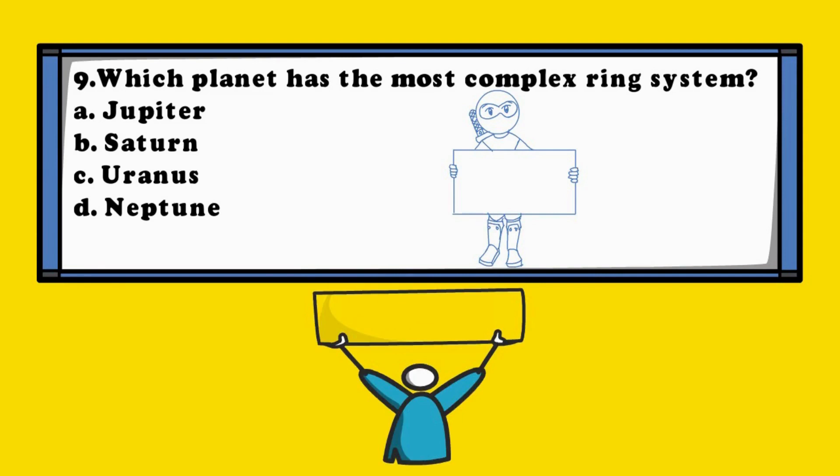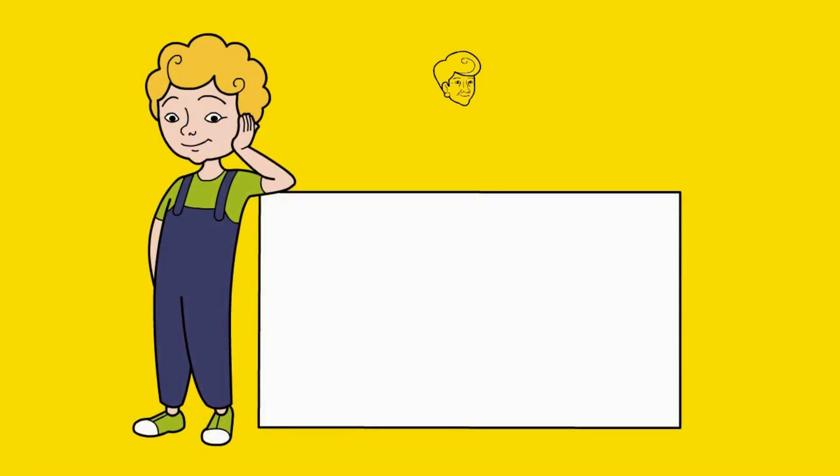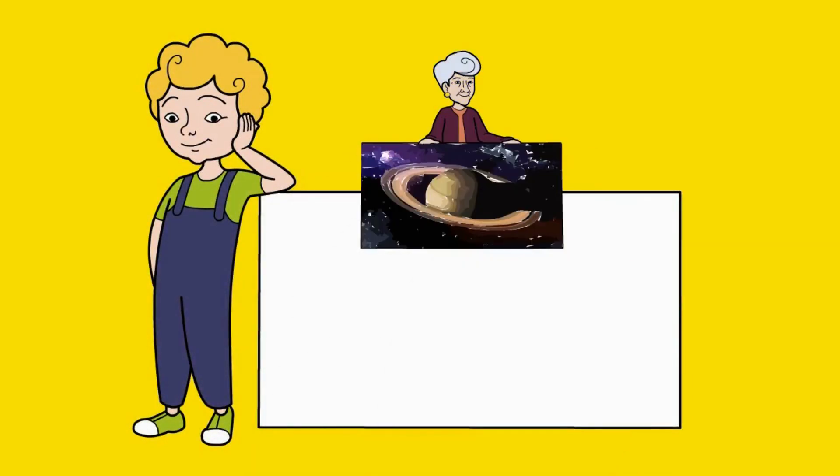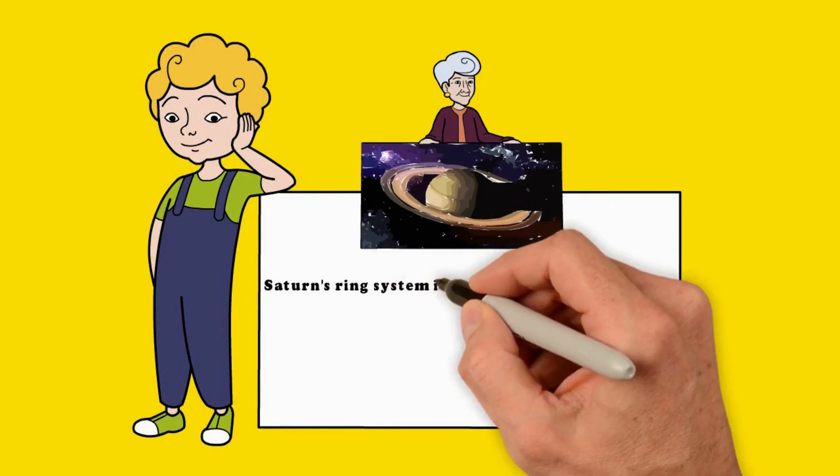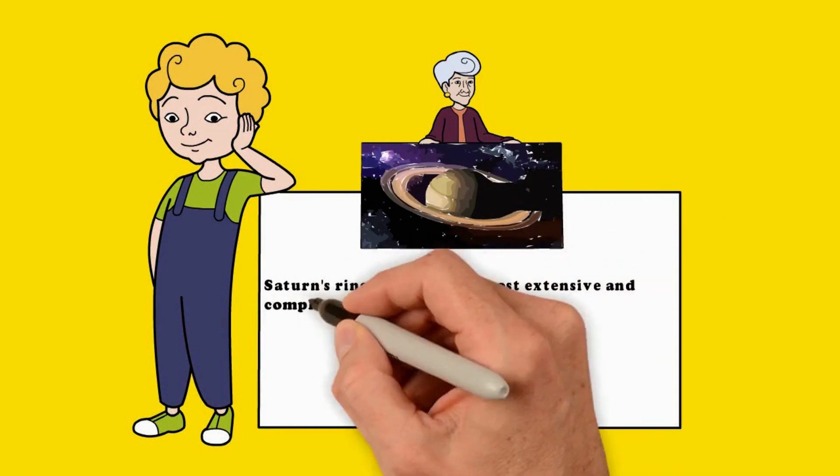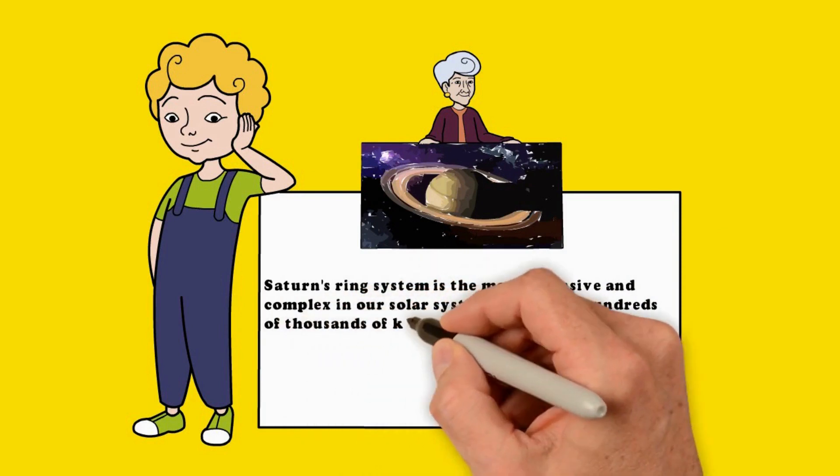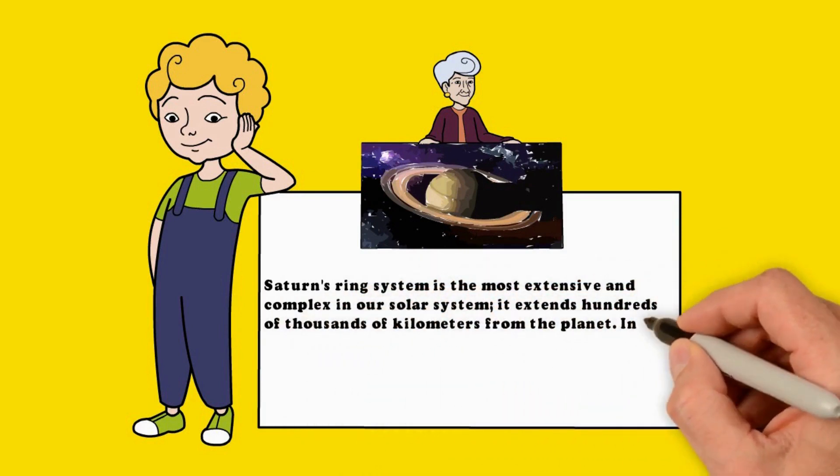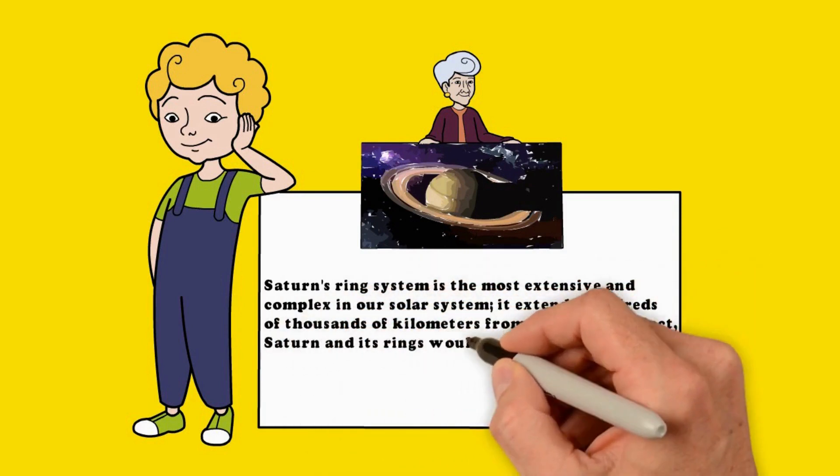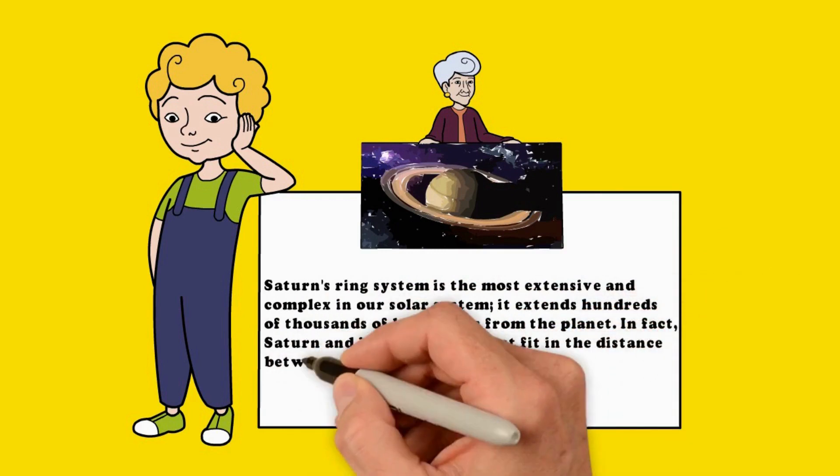The answer is B. Saturn. Saturn's ring system is the most extensive and complex in our solar system. It extends hundreds of thousands of kilometers from the planet. In fact, Saturn and its rings would just fit in the distance between Earth and the Moon.